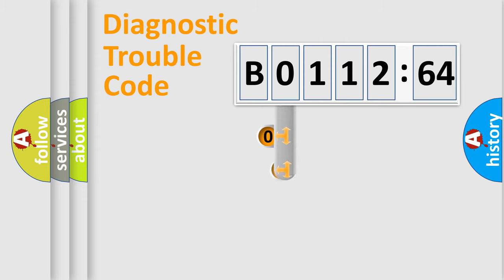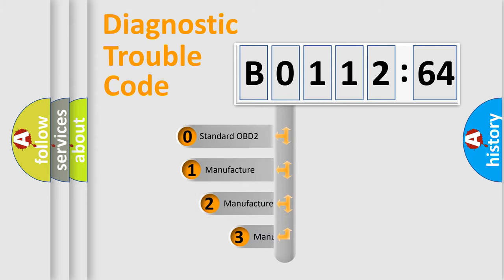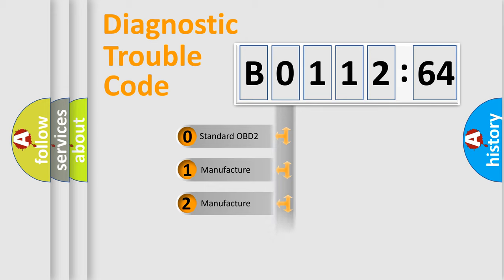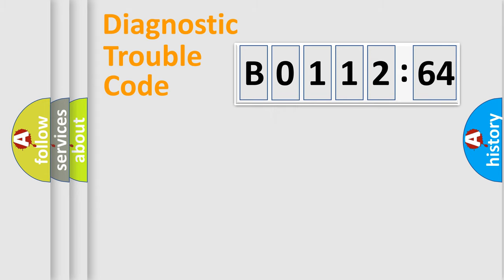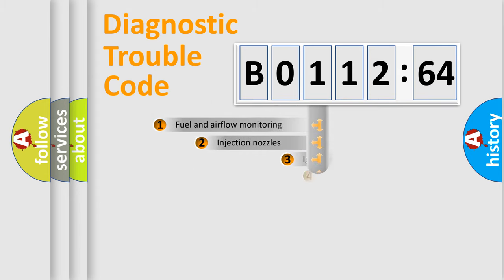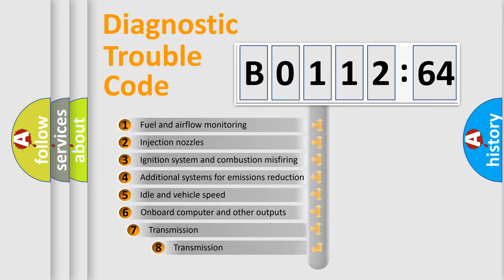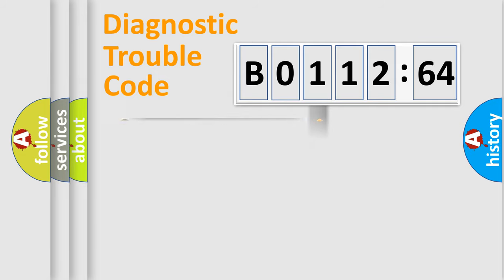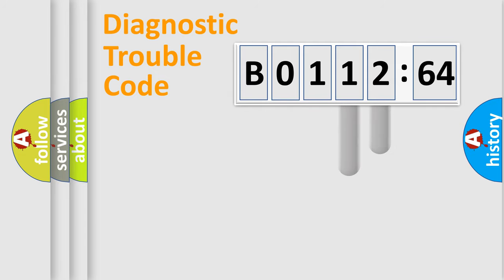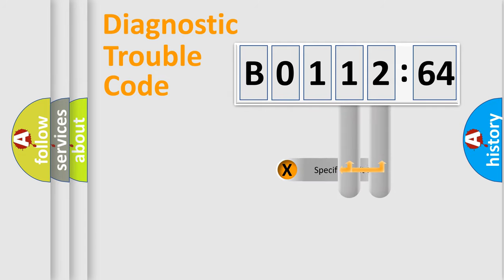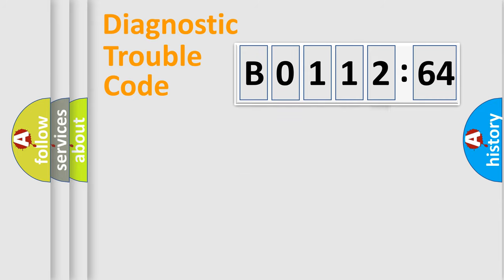This distribution is defined in the first character of the code. If the second character is expressed as 0, it is a standardized error. In the case of numbers 1, 2, or 3, it is a more manufacturer-specific expression of a car-specific error. The third character specifies a subset of errors. This distribution is valid only for the standardized DTC code. Only the last two characters define the specific fault of the group.